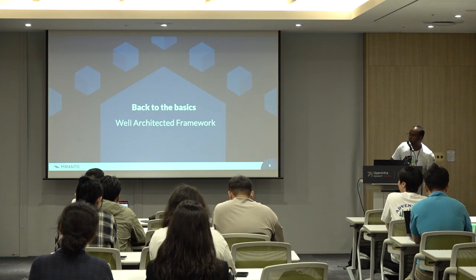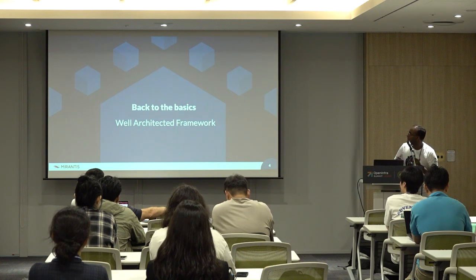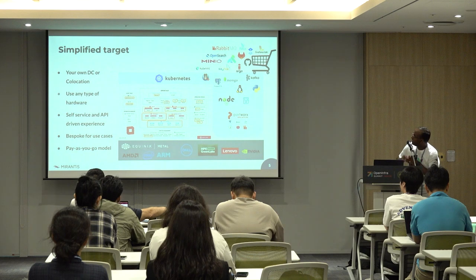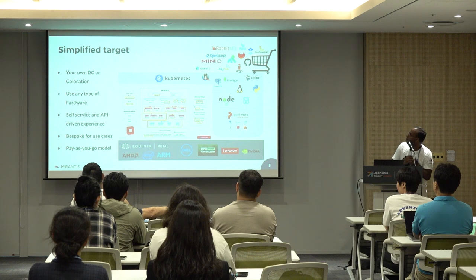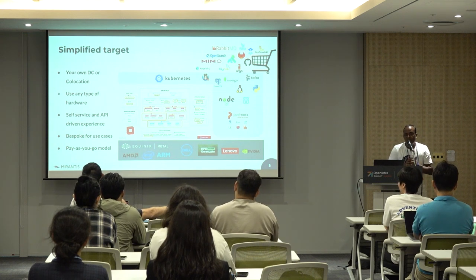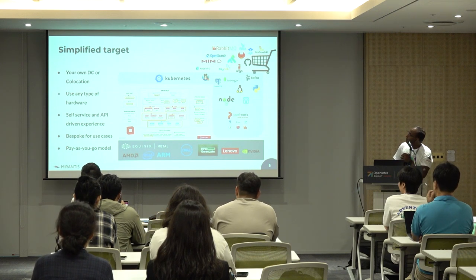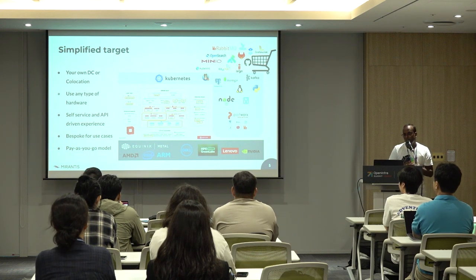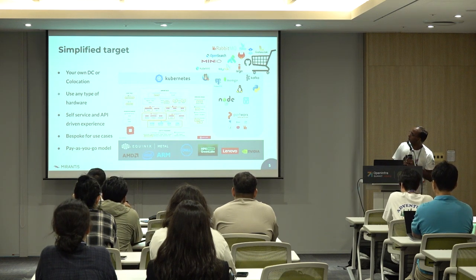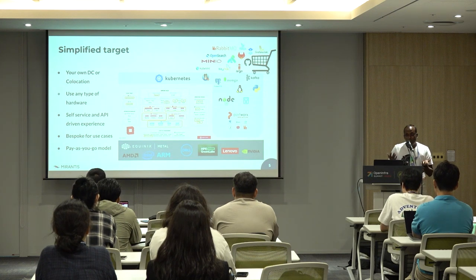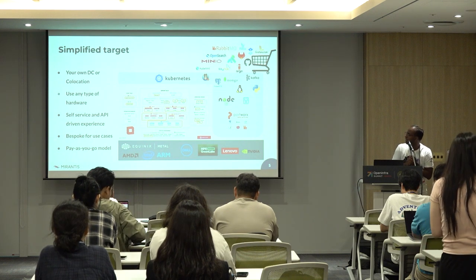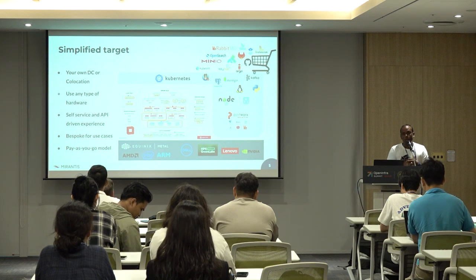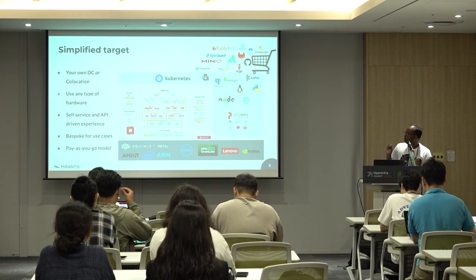Back to the basics. We are going to reuse some of the same names and concepts as public clouds — for example, the well-architected framework. This is the target we want to achieve. If we want to build something that looks like a public cloud, we need to reuse some of the same concepts. It will be your own data center or co-location, but it will be yours. We can use any type of hardware — we don't need to be very opinionated. We can use Dell hardware, HP hardware, Supermicro hardware — basically any bare-metal servers.